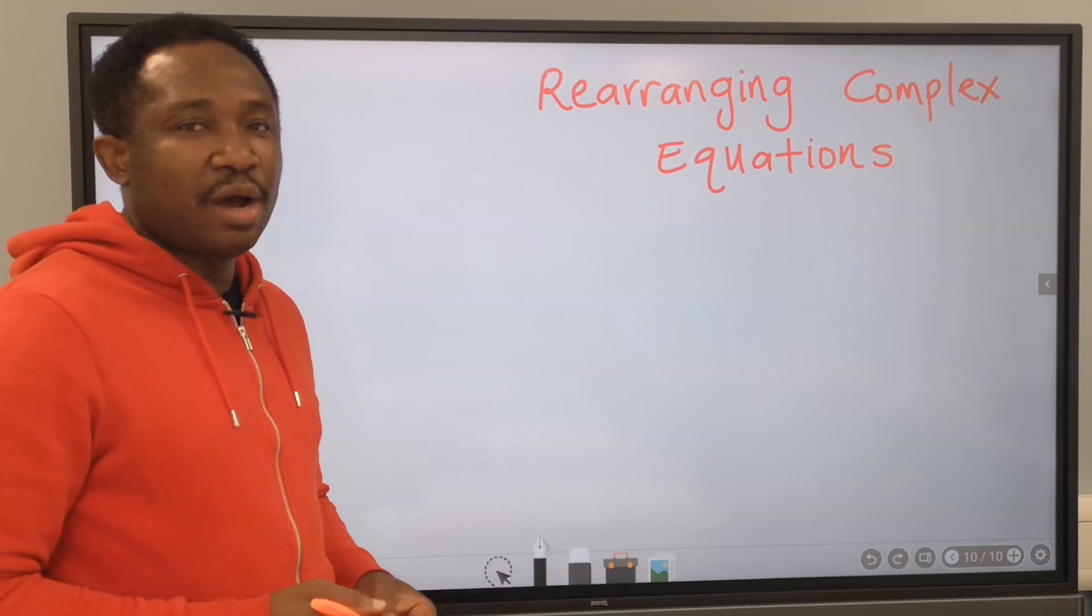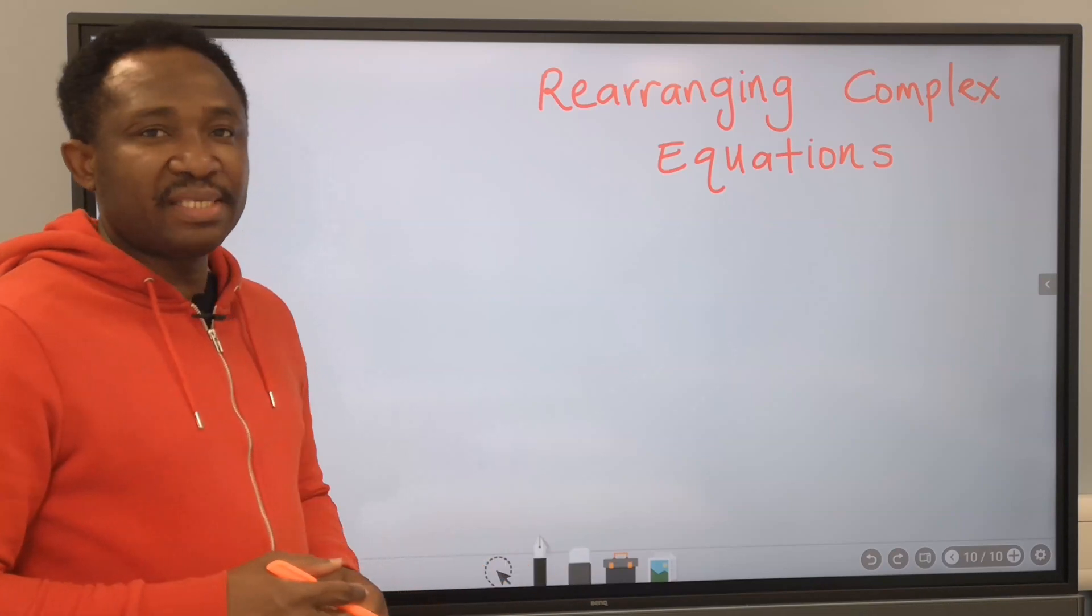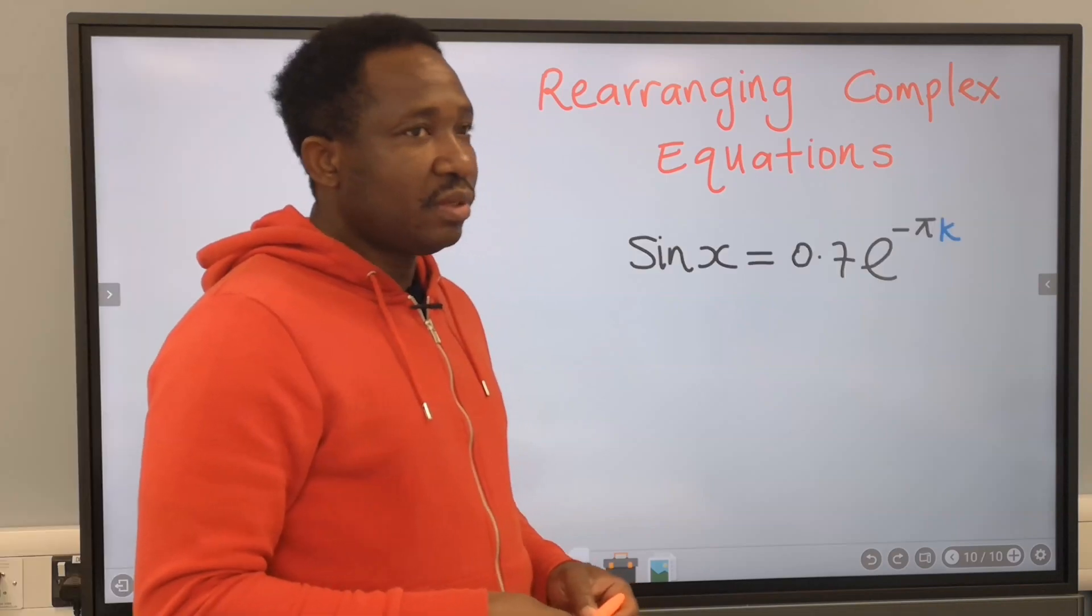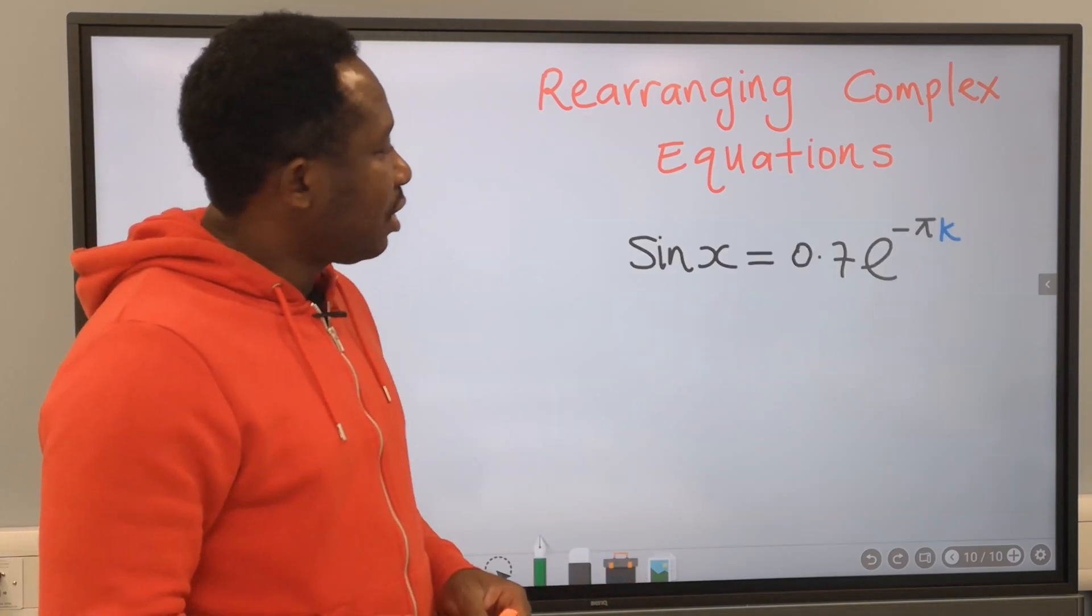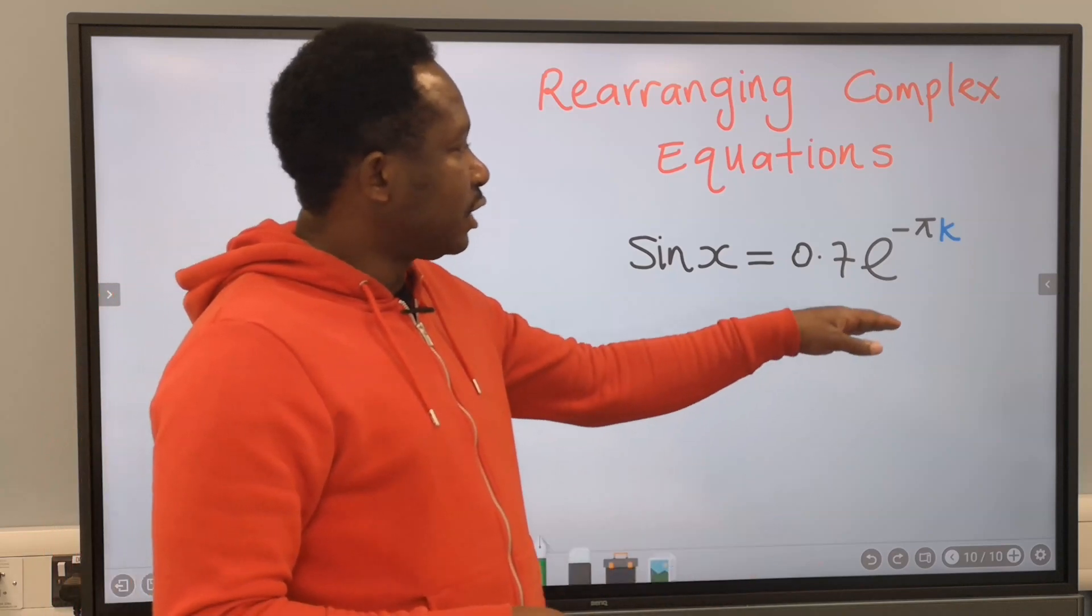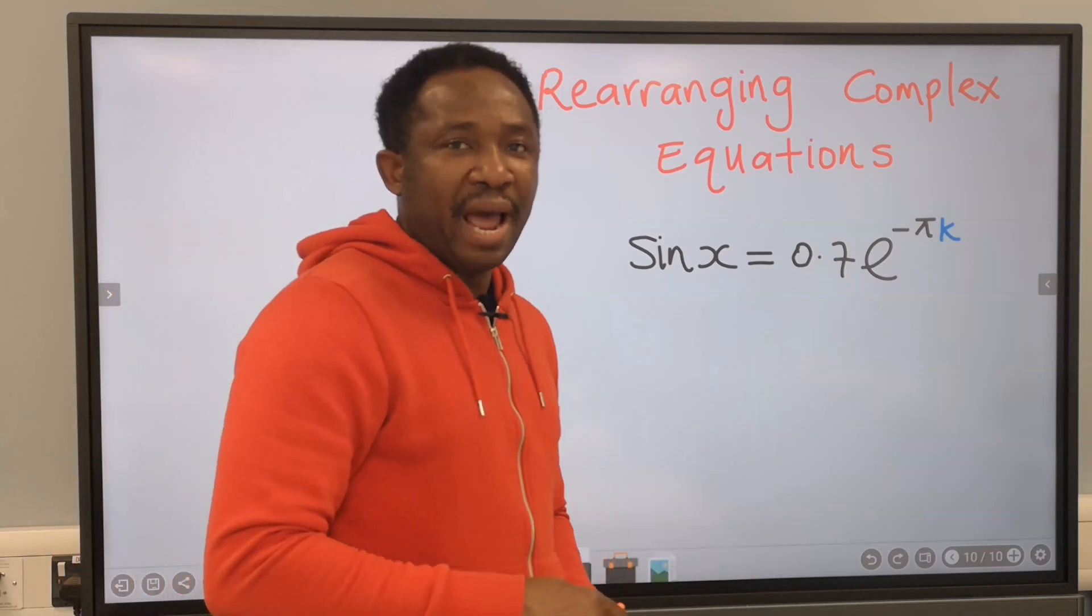Let's learn how to rearrange complex equations. For example, sin x equals 0.7 times e to the power of minus pi k.